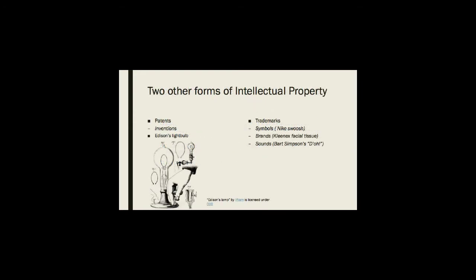According to the World Intellectual Property Organization, intellectual property refers to the creations of the mind. Besides copyrights, patents and trademarks are two other forms of intellectual property. Patent law covers inventions — it has to be some new functional development in the field, and patents give the inventor an exclusive right to the invention for a limited amount of time. Trademarks protect logos, symbols, and names representing a product or brand — think about the Nike swoosh, the brand name Kleenex, or even a sound like Homer Simpson's 'D'oh,' which is trademarked by Fox Television. Trademark law allows companies to protect their brand and its reputation, and also helps to solidify the brand name in the minds of consumers.